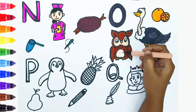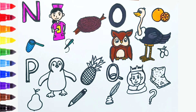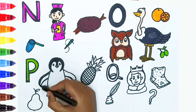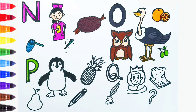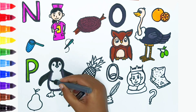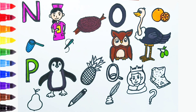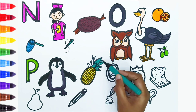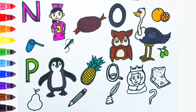O is for olives. P is for penguin. P is for pineapple. P is for pear.